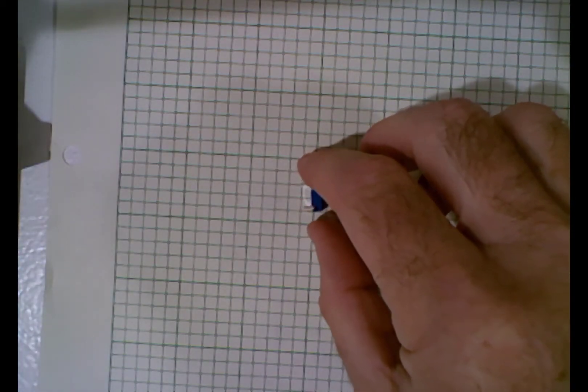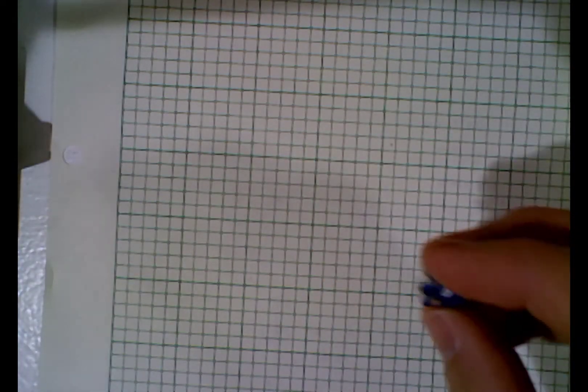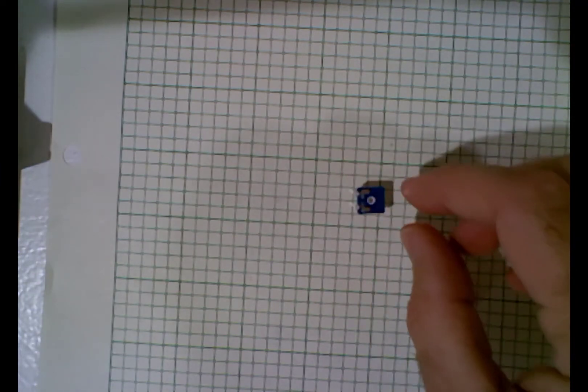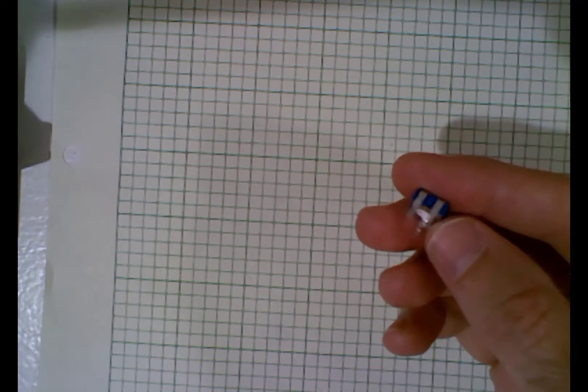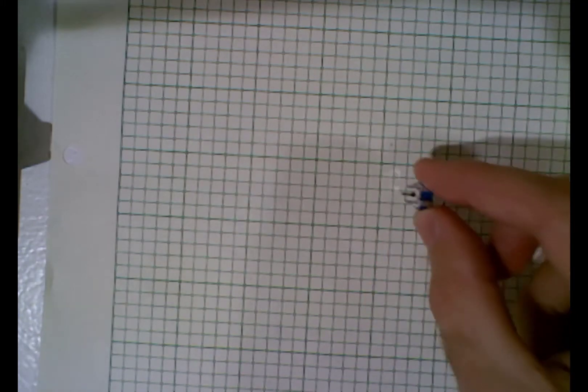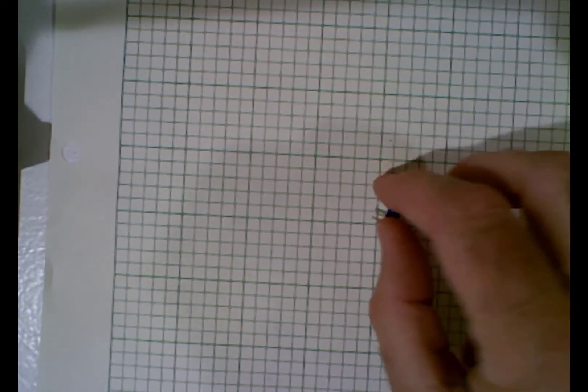So in this video we're going to talk about potentiometers. This is the potentiometer that came in the Arduino kit. You can see it's a small blue box with three terminals on it. And the three terminals are pretty easy to understand.